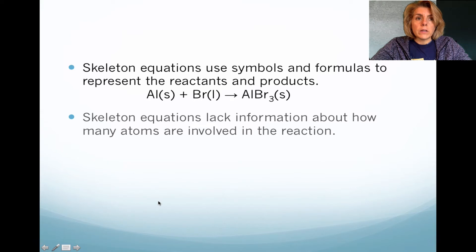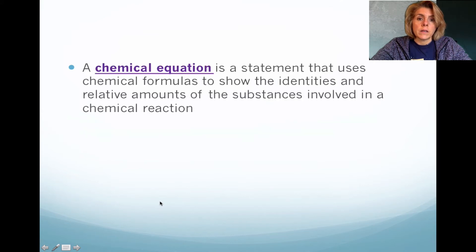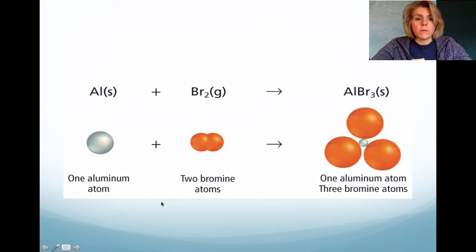Now, the skeleton equation, eventually you'll find that there's what we call coefficients. And that doesn't necessarily have a coefficient. So a chemical equation has to have chemical formulas. It has to tell us what the amounts are. And it shows the overall chemical reaction. So here is an example of a skeleton equation. So here we have aluminum solid plus bromine gas forms aluminum bromide. Now, there's an understood one in front of each substance to represent the amounts of the chemical reaction.